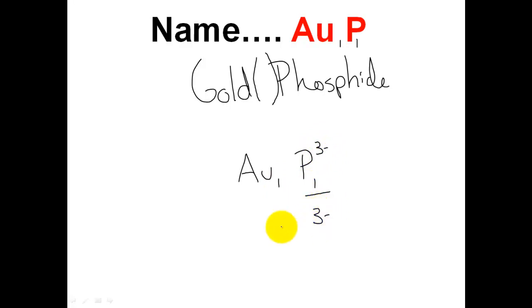Therefore, the total charge on phosphorus is three minus. The total charge on the gold side needs to be three plus. They need to be opposite. They need to be equal and opposite. So therefore, the question is, just like three times one gave me a three minus, what times one is going to give me a three plus? And the answer to the charge is going to be three positive. So I will name this gold three phosphide.